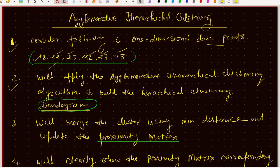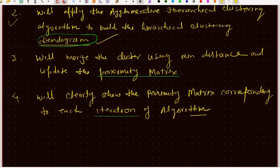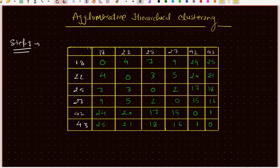We will merge the clusters using the minimum distance and update the proximity matrix. We need to write the distances in a table format, taking the distance from each data point. We have 6 data points: 10, 22, 25, 27, 42, and 43. These same values form both the row and column headers of the proximity matrix.